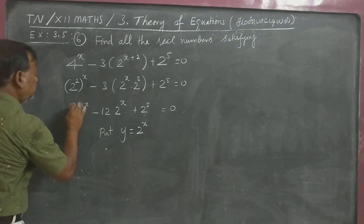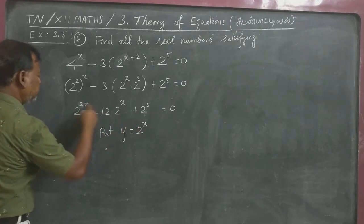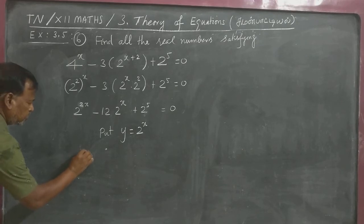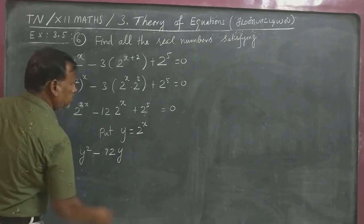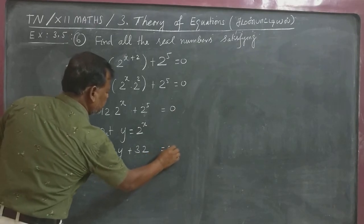This one, 2 power X is equal to 2 power X. So it becomes 2 power X the whole square, we can write Y square minus 12 into Y plus 32 equal to 0.